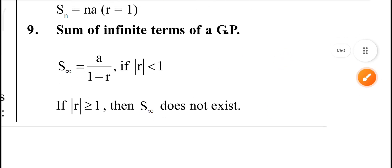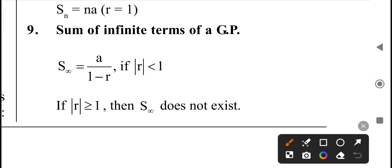Sum of infinite terms of GP — geometric progression. The formula is S infinity equal to A by 1 minus R, if mod R is less than 1. If mod R is greater than 1 or equal to 1, then S infinity does not exist.